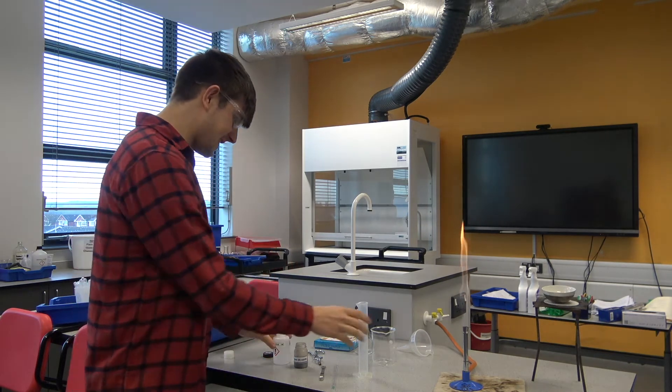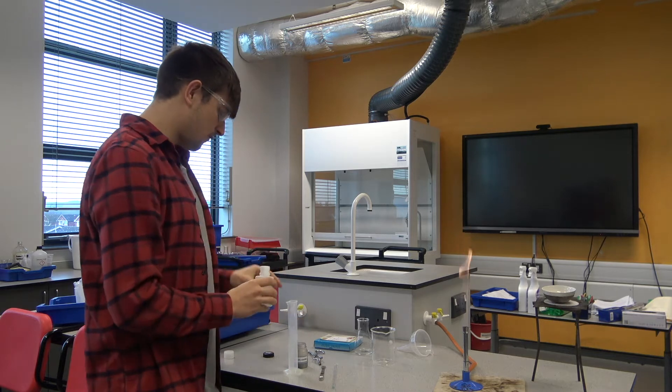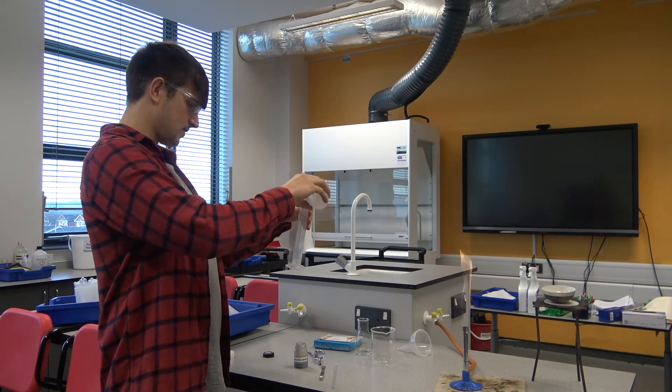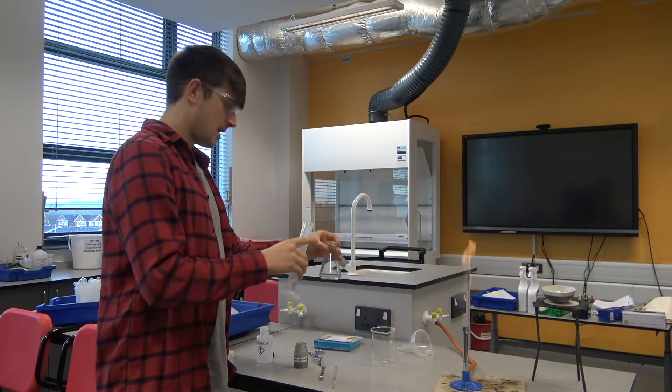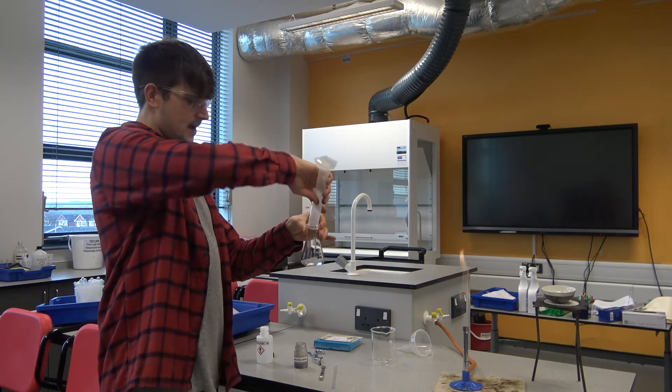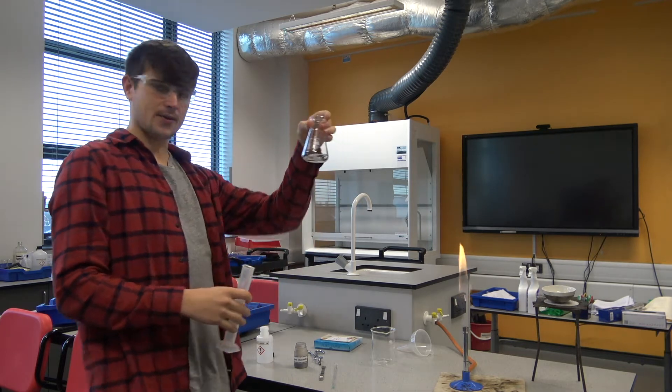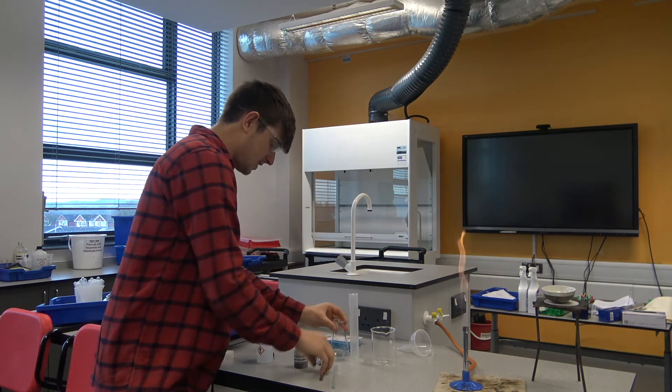The way this practical works is by reacting sulfuric acid, and usually it's a known amount. So we're going to measure out 10 milliliters of sulfuric acid and add it into our conical flask.